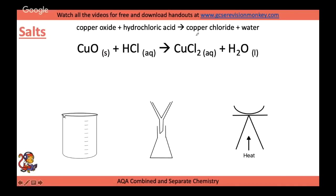You might be asked to make a salt, for example copper chloride. Think to yourself: what acid would you need to make a chloride? That's hydrochloric acid. And what would you add to make copper? Often something that's an oxide — copper oxide in this case. If you're asked to make calcium sulphate, you'd need calcium oxide and sulfuric acid. Look carefully at what you're asked to make, then you'll know what acid to use.